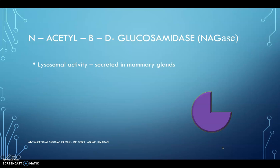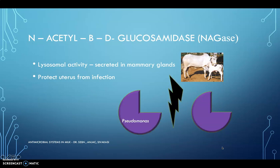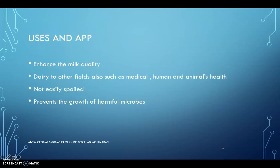N-acetyl-beta-D-glucosaminidase also possesses lysosomal activity. It is present in the mammary glands, especially in the cow. This enzyme protects the uterus from infection. The cow uterus contains some harmful bacteria, especially Pseudomonas and Staphylococcus, which are inhibited by N-acetyl-beta-D-glucosaminidase.